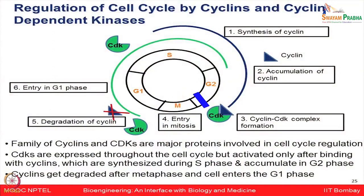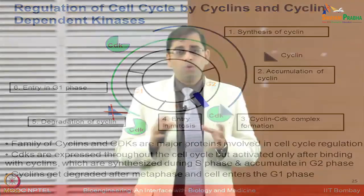The family of cyclins and CDKs are crucial for cell cycle regulation. CDKs or cyclin-dependent kinases are expressed throughout the cell cycle; however, they are activated only after binding to cyclins, which are synthesized during S phase and accumulate in G2 phase. Cyclins get degraded after metaphase, and the cell enters G1 phase.